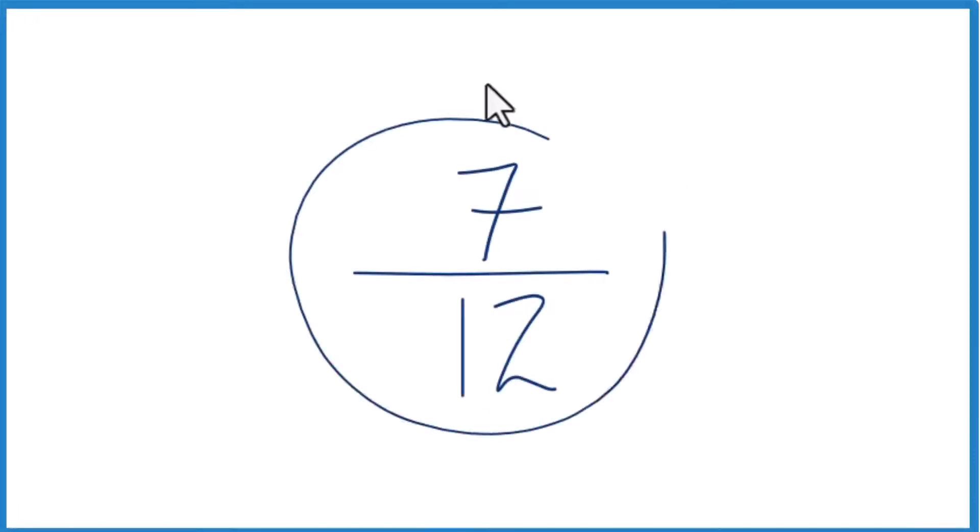Let's write the fraction 7 twelfths as a decimal. Here's how we do that. So we look at 7. It's smaller than 12. So when we divide 7 by 12, we know we're going to get a number less than 1. That's our decimal.